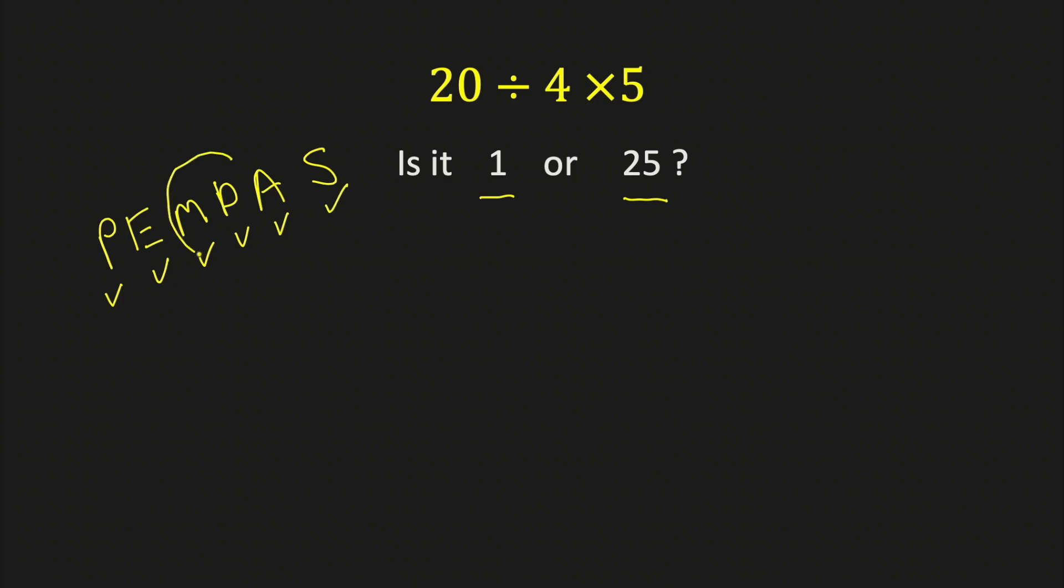But multiplication and division have equal precedence. That is, we simply do them in order, left to right. Multiplication does not have greater precedence than division.